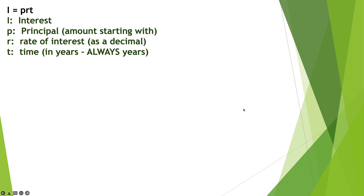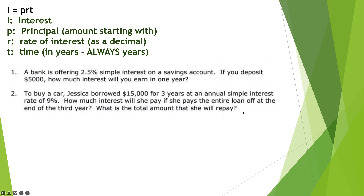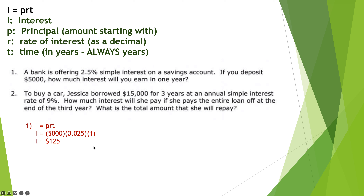Let's do a little more with I equals PRT. There are two more questions — try number one first, then we'll go over the answer. For question one: the principal is $5,000, the interest rate is 2.5% which converts to 0.025, and it's for one year. So: 5,000 times 0.025 times 1 equals $125 in interest earned sitting in the bank.